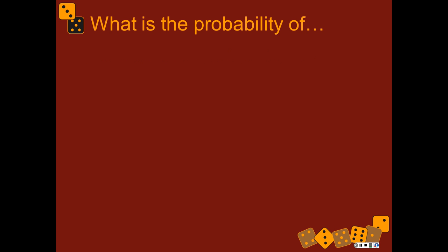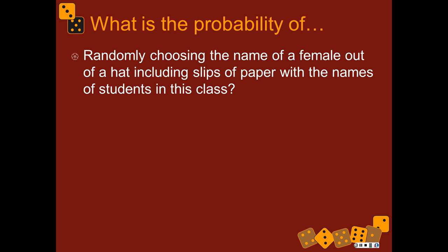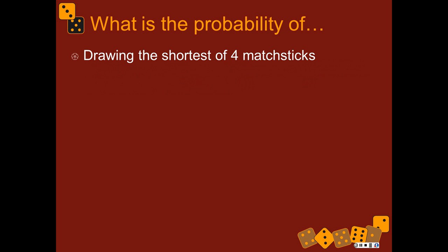So what's the probability of randomly choosing the name of a female out of a hat containing the names of all the students in our class? Well, we'd have to figure out how many females there are. So let's say there are 28 females and 4 males — then it would be 28 divided by 32. That would be the probability. And the shortest of 4 matchsticks? Well, there's 1 shortest matchstick and there are 4 matchsticks, so it's 1 in 4.